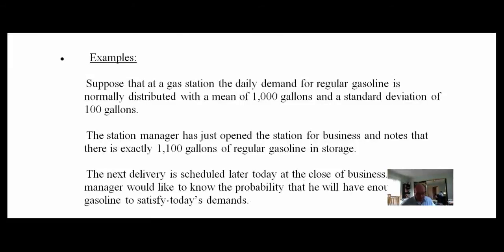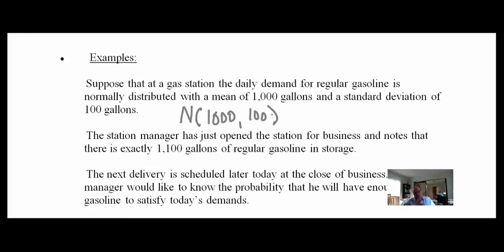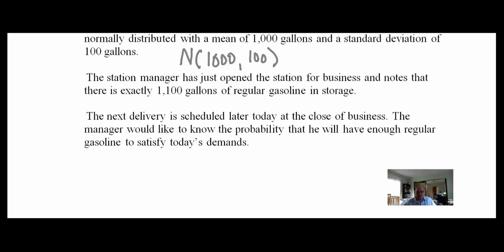Here's an example. Suppose at a gas station — remember our old gas station that was uniformly distributed — now we say it's normally distributed with mean 1,000 gallons and standard deviation 100 gallons: N(1000, 100). The station manager opens and notes exactly 1,100 gallons of regular gasoline. Any given day, demand varies — sometimes more, sometimes less. He wants to know: is there enough gas to satisfy today's demand?